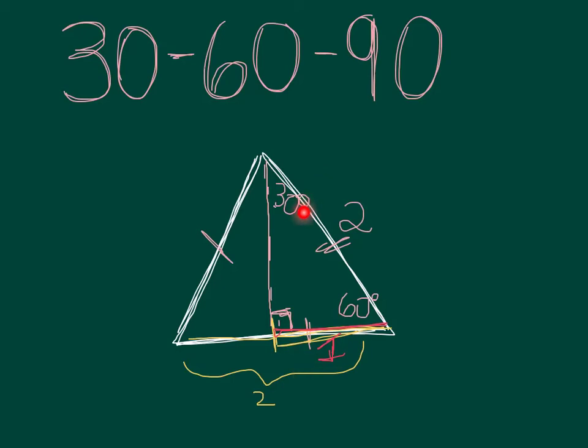And then we can just use the Pythagorean theorem to find the other missing side. Let's call this b. So we know b² + 1² = 2². b² therefore equals 4 - 1 = 3. So b equals the square root of 3.